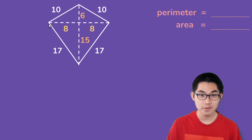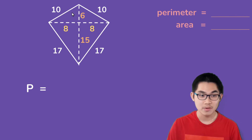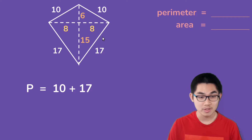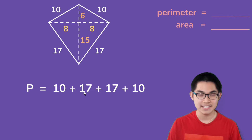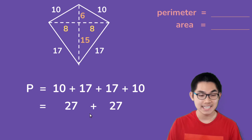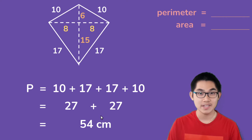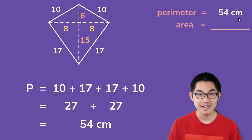How do you find the perimeter of this kite? Remember, the perimeter is just all the sides added together, so it is 10 plus 17 plus 17 plus 10. We know that 10 plus 17 is 27, and on the other side it is also 27. Lastly, 27 plus 27 is 54 centimeters — that is the perimeter of this kite.